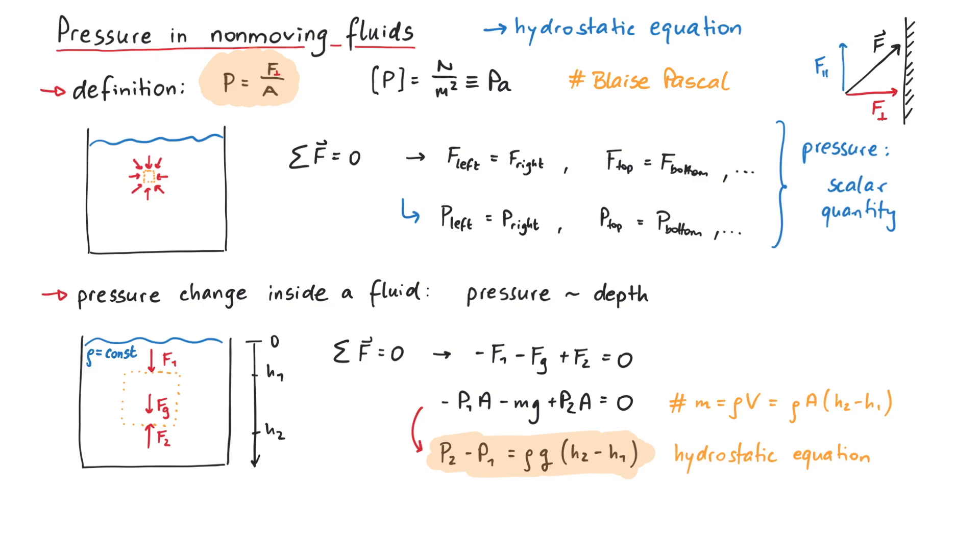Also, if you investigate the forces in the horizontal direction, you will find that the pressure does not change. If we set h1 to zero, then p1 is the atmospheric pressure from the air above the fluid, and the equation simplifies a bit.